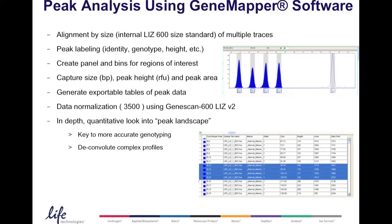That is something you get when you look at these traces in GeneMapper software. In GeneMapper software, which is the fragment analysis software that Life Technologies provides, you can align labeled DNA fragments by size using internal size standards. You can label these peaks by identity, by genotype, by peak height. You can create panels and bins for your regions of interest and capture the size in base pairs, peak height in RFUs, and areas, and export this data into Excel-readable tables.